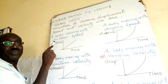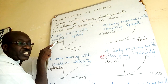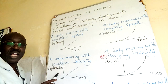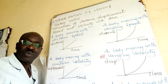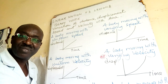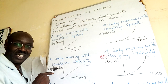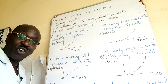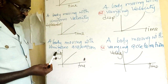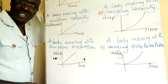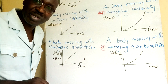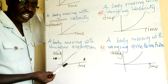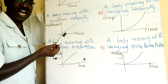When you talk about a graph of distance against time, that information is essentially representing speed. Displacement against time represents velocity. A graph of velocity against time — the relationship we know is velocity over time gives acceleration, so we talk about acceleration. When it is uniform, the graph is linear — it is a straight line.